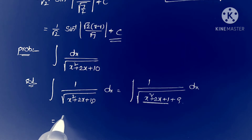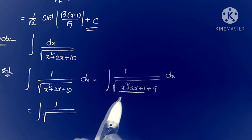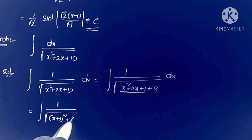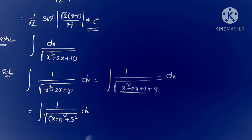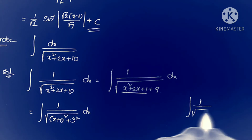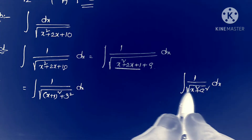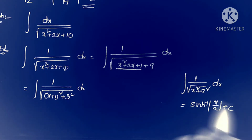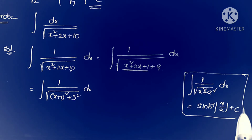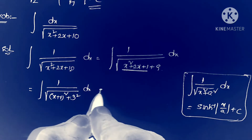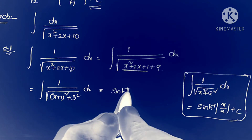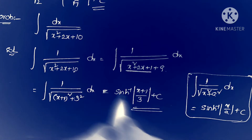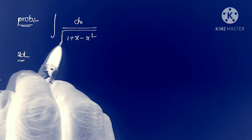This equals integral 1 by square root of (x plus 1) whole squared plus 9, that is 3 squared, times dx. This is in the form of integral 1 by square root of x squared plus a squared, dx, whose formula is sinh inverse of x by a plus c. Applying that formula: sinh inverse of (x plus 1) by 3, plus c. That's all — this is the answer. Next problem: integral dx by square root of 1 plus x minus x squared.